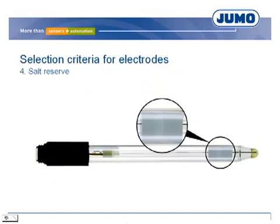The electrolyte of the reference electrode is a saturated potassium chloride solution. Depending on the application, such as ultra-pure water or highly polluted media, the salt concentration can be reduced very fast, giving the electrode a short operating life. Due to a salt reserve of salt rings, the electrolyte remains saturated, so the operating life of the electrode is much longer.